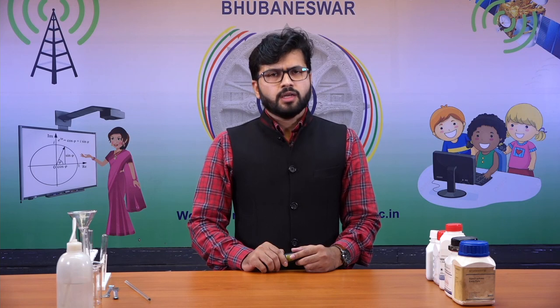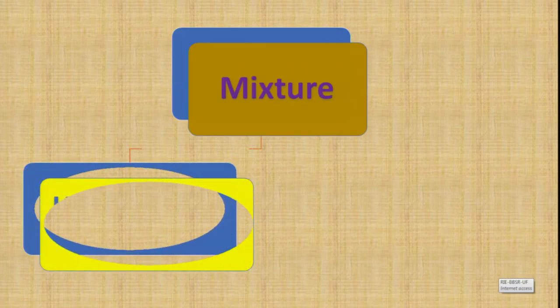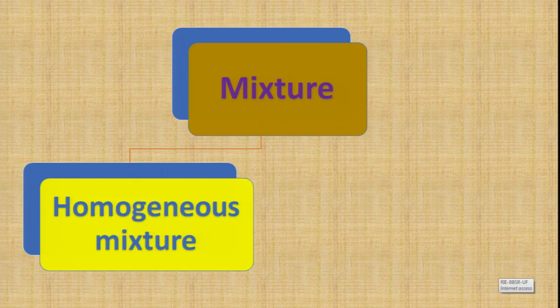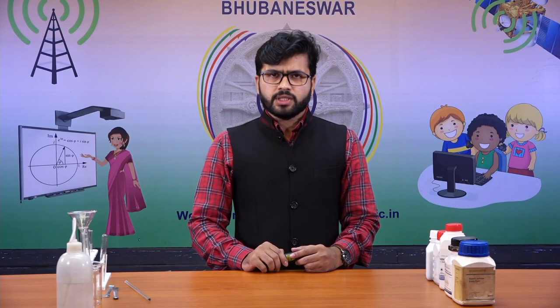So far in this chapter we have discussed that mixtures can be of several types. Depending on the nature of the component, we can classify mixtures into two types: homogeneous mixture and heterogeneous mixture. Homogeneous mixtures have a uniform distribution throughout, whereas heterogeneous mixtures have a non-uniform distribution throughout the bulk.